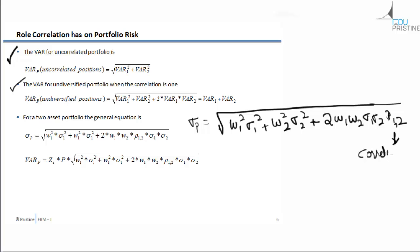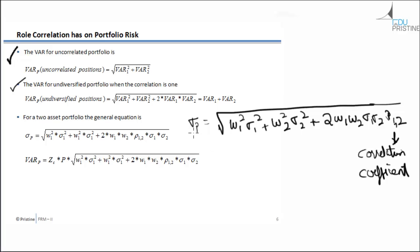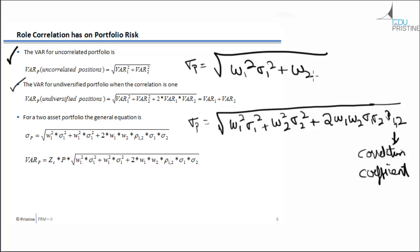When two assets are uncorrelated, the correlation coefficient is zero, so the third term vanishes. The standard deviation of the portfolio simplifies to: square root of (W1 squared times Sigma1 squared plus W2 squared times Sigma2 squared). Therefore, the VaR of the portfolio when two assets are uncorrelated is: square root of (VaR1 squared plus VaR2 squared).